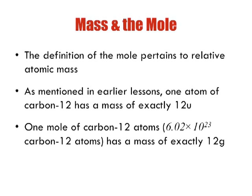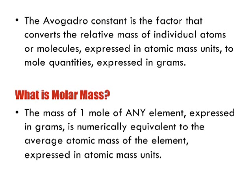So, molar mass — mass and the mole. The definition of the mole pertains to relative atomic mass. As we mentioned earlier in the course, we talked about how everything is compared to one atom of carbon-12, which has an atomic mass of 12 units. So one mole of carbon-12 atoms contains 6.02 times 10 to the power of 23 atoms, and that has a mass of exactly 12 grams. The Avogadro constant is the factor that converts the relative mass of individual atoms or molecules expressed in atomic mass units to mole quantities, which are expressed in grams.